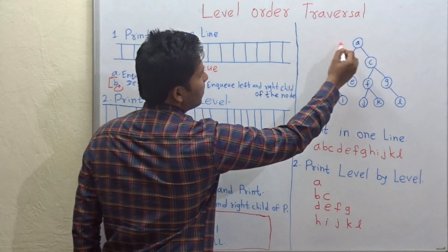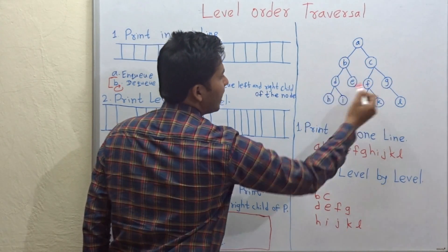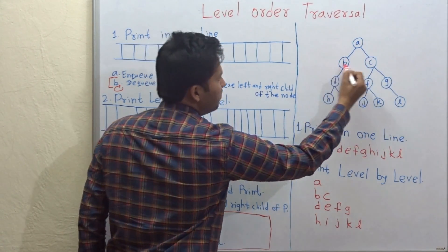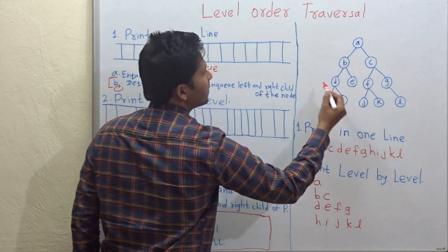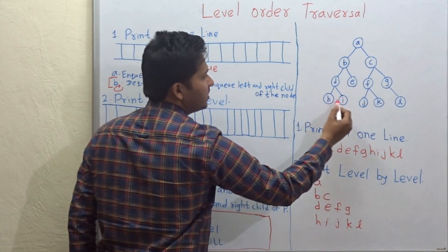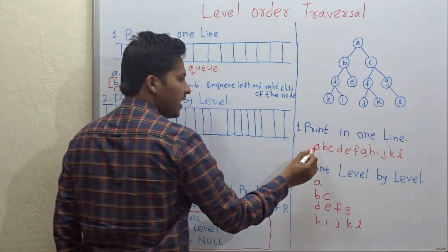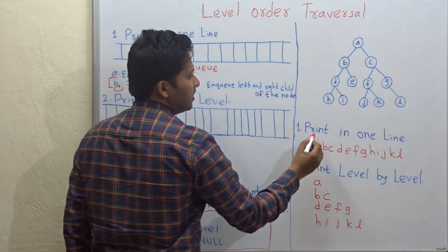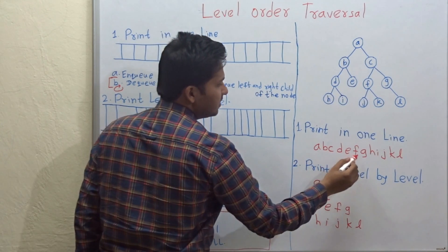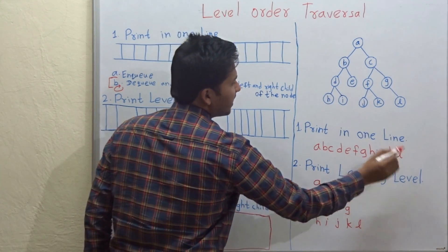As you know, the level order traversal of this binary tree is A, B, C, D, E, F, G, H, I, J, K, L. So let's write it in one line: A, B, C, D, E, F, G, H, I, J, K, L.